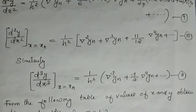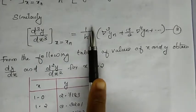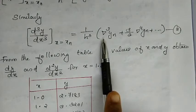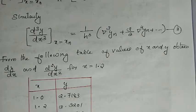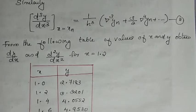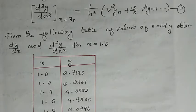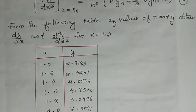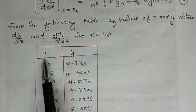Similarly, d³y by dx³ at x equal to xn equals 1 by h cubed times del cube yn plus 3 by 2 del raise to 4 yn, plus etc. Using both Newton's forward and backward difference formulas, we derive expressions for first, second, and third derivatives. Now consider the problem: given values of x and y, obtain dy by dx and d²y by dx² for x equal to 1.2.